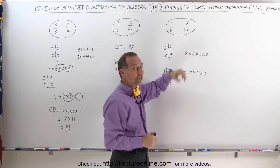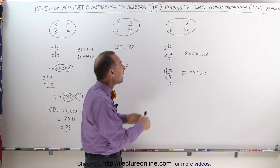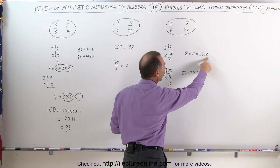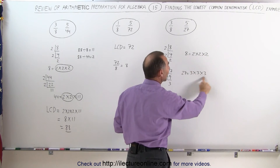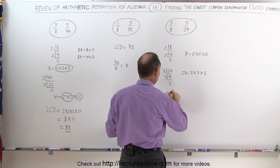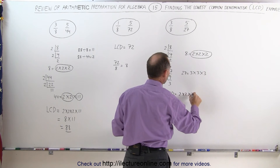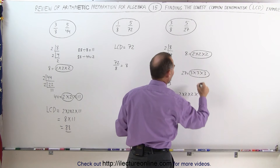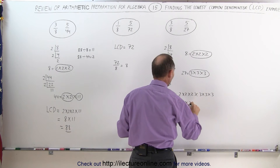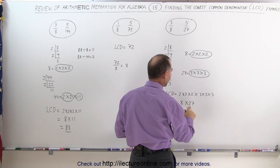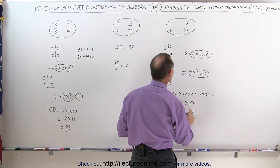Even though 8 and 27 are not prime numbers, the LCD is still the product of the two denominators. When we write 8 as a product of its prime factors and 27 as a product of its prime factors, notice there are no prime factors in common. Which means the lowest common denominator equals 2 times 2 times 2, times 3 times 3 times 3, which is 8 times 27. That equals 160 plus 56, or 216, which is simply the product of the two denominators.